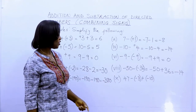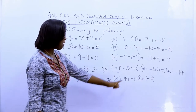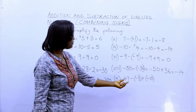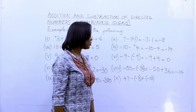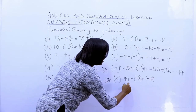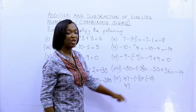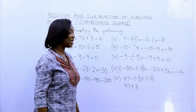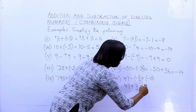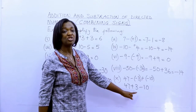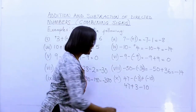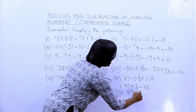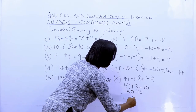For the last example, forty-seven minus minus three plus minus ten. Simplify the double signs: minus and minus gives plus, and plus and minus gives minus. So it becomes forty-seven plus three minus ten. Forty-seven plus three is fifty, and fifty minus ten gives us forty.